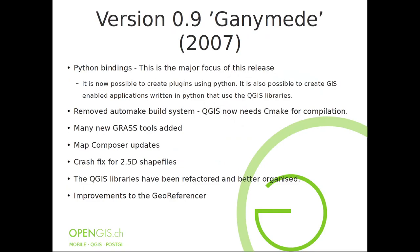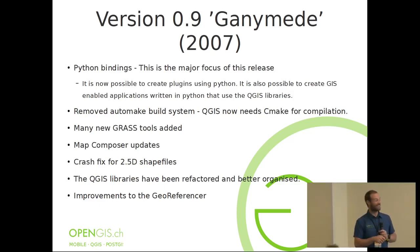Python has been in QGIS since version 0.9 back in 2007. As you can see, the commit message then was that the major focus was to have Python bindings. And what I'd like to point out, beside the fact that the battery was almost gone, is that shapefiles were already breaking things back then. So do not use shapefiles.